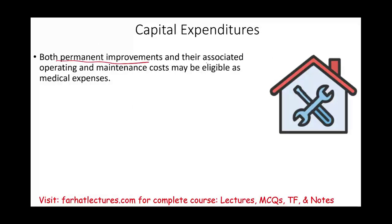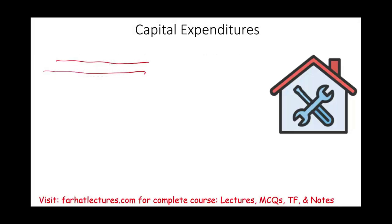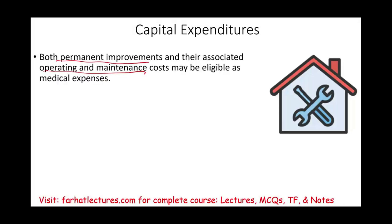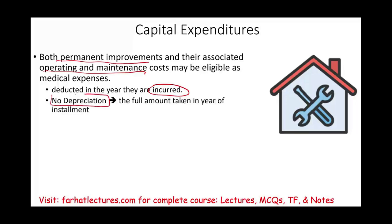Both the permanent improvement and its associated ongoing operating expenses are eligible as medical expenses. After installing the elevator or pool, any additional maintenance is deductible in the year incurred. You don't take depreciation because you took the full deduction in the year of installation, and it's more beneficial to deduct the full amount to help exceed the 7.5% AGI threshold.